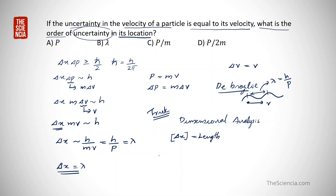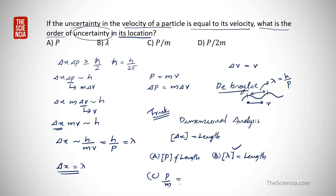Checking the options: the dimension of p (momentum) is not length, so that option is incorrect. Lambda is wavelength, so its dimension is length — correct. Option C is p divided by m, which gives velocity v, whose dimension is not length. Option D also does not have the dimension of length. So the correct answer is option B, lambda.